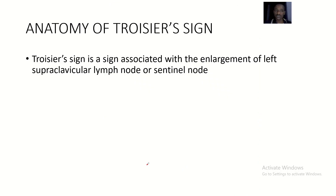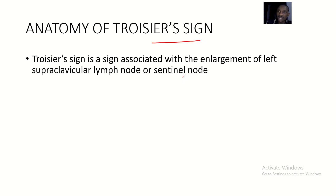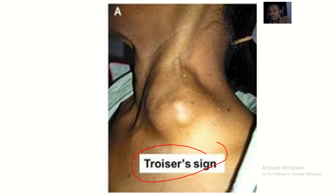So the anatomy of the Troisier's sign: the Troisier's sign is a sign associated with the enlargement of your left supraclavicular lymph node, also called the sentinel lymph node. It's not just any supraclavicular lymph node — it is specifically the left one. So the left supraclavicular lymph node becomes swollen.